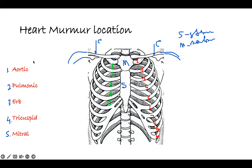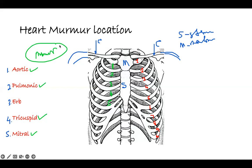Sometimes they want you to listen to the aortic murmur, pulmonic murmur, or someone has a tricuspid murmur or a mitral murmur — basically where they will ask you is where do you put a stethoscope to listen. So I have a mnemonic, but you have to start from one place, so we'll claim this first.